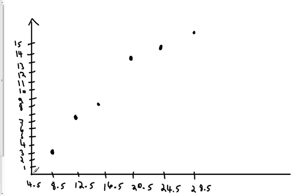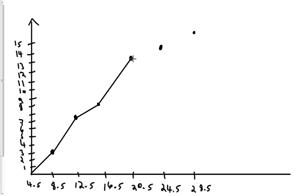Here's how we create our ogive: we connect these dots with line segments. It is a line graph depicting cumulative frequencies, with class boundaries on the horizontal scale. Since it's not a polygon, we don't have to connect it back to the x-axis. And here is your ogive for our data set.